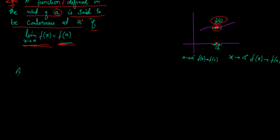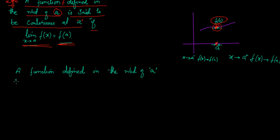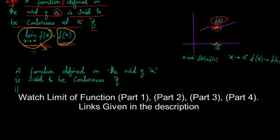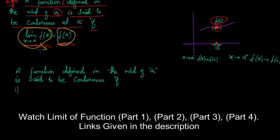So a function f, defined in the neighborhood of a, is said to be continuous if the following conditions hold. The limit should first exist, meaning the left-hand limit and the right-hand limit both should exist and should be equal. So the first condition is: the left-hand limit as x approaches a from the negative side of f(x) should exist.